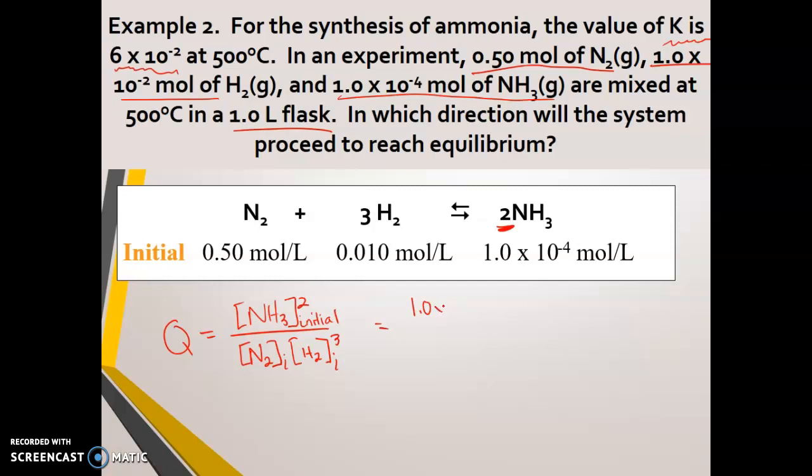So now I'm going to plug in these values into the Q expression. So 1.0 times 10 to the negative fourth, and we are going to square this and then divide by 0.50 times 0.010 and cube this. And when we solve that, we should get 0.020 for our Q.